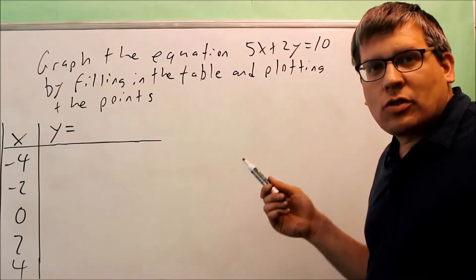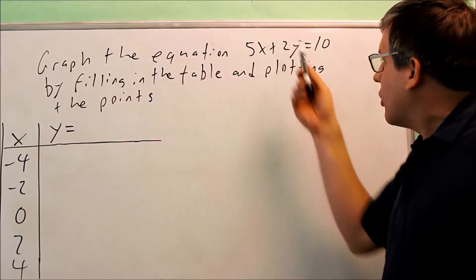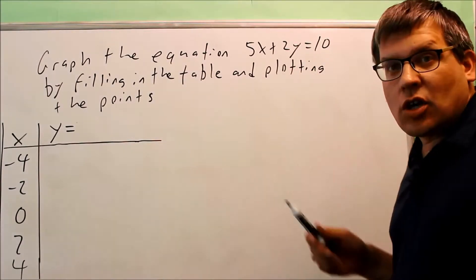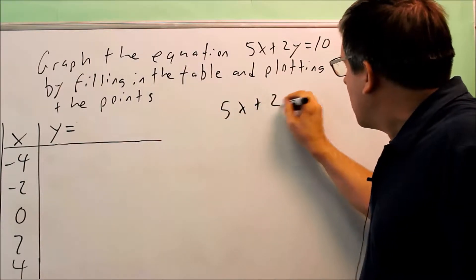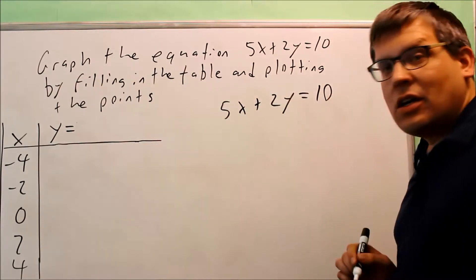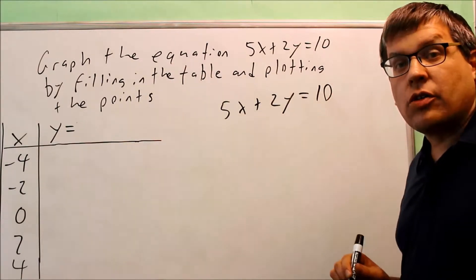Now in order for this process to work, this here has to automatically be solved for y. The equation that we have here is not solved for y so we have to do that first. We're going to take 5x plus 2y equals 10 and first I want to solve this for y so I can put it in here and use that for the table.